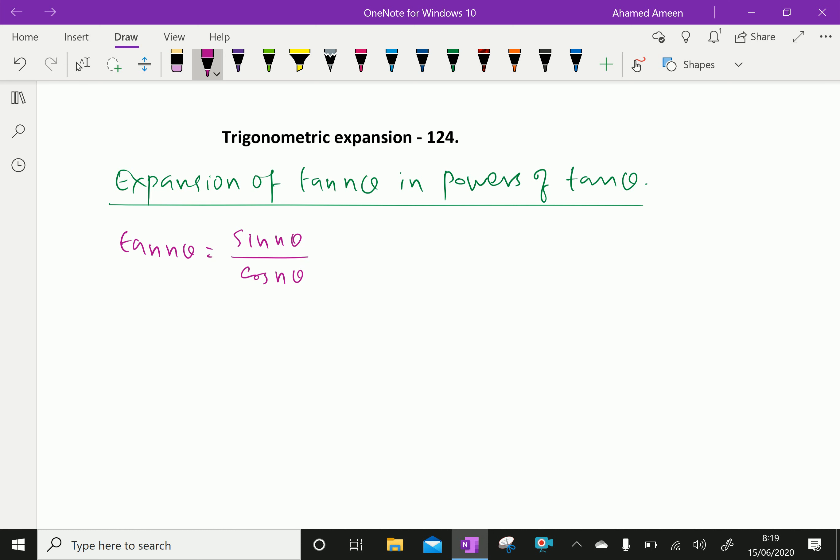We have to expand sin n theta in the numerator. That is Nc1 cos of n minus 1 theta into sin theta minus Nc3...